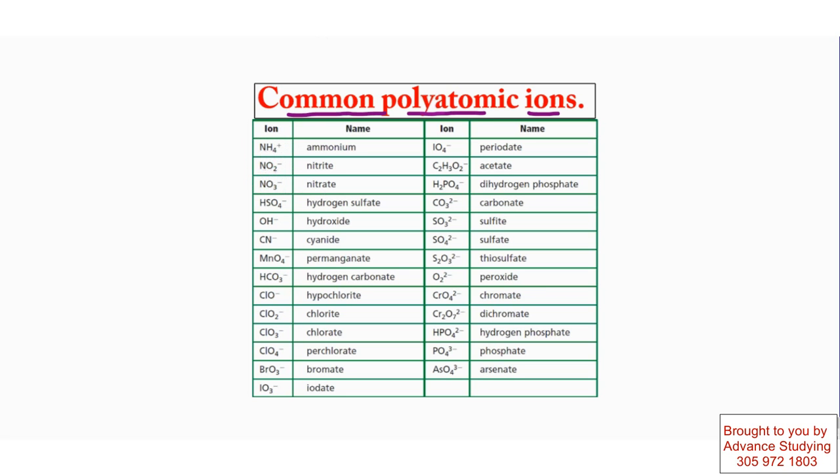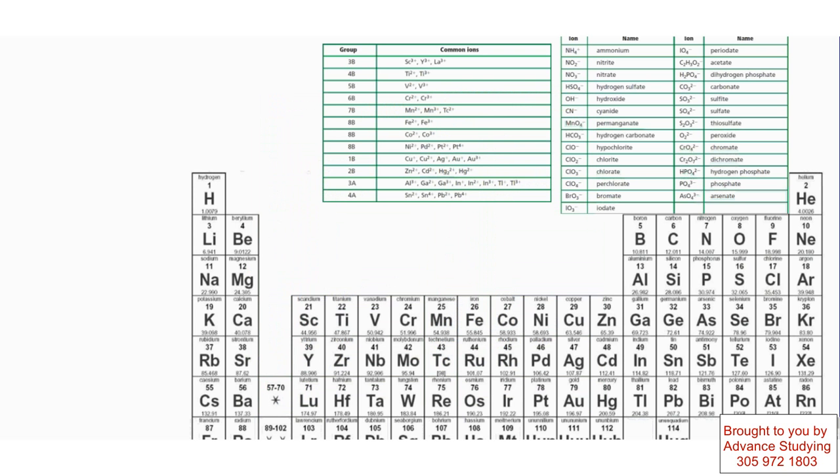We're going to name polyatomic ions with metals. We name these polyatomic ions and we think of them as non-metals because they do have a negative charge. And all we have to do is look at the table and name them with the metal. Let's see how it works. Let's do an example.